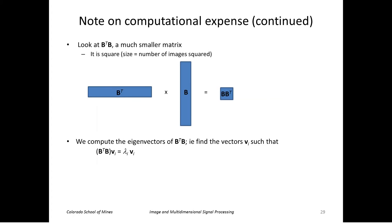So instead we'll look at this multiplication of B transpose B. So this is a much smaller matrix, as you can see. It's basically a square matrix where the dimensions are the number of images that we have. So we can compute the eigenvectors of this smaller matrix.